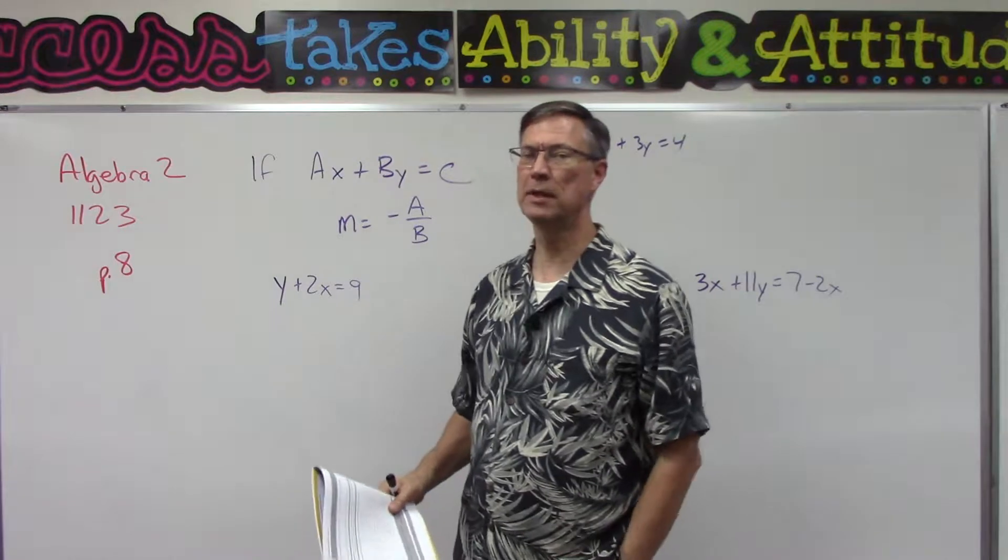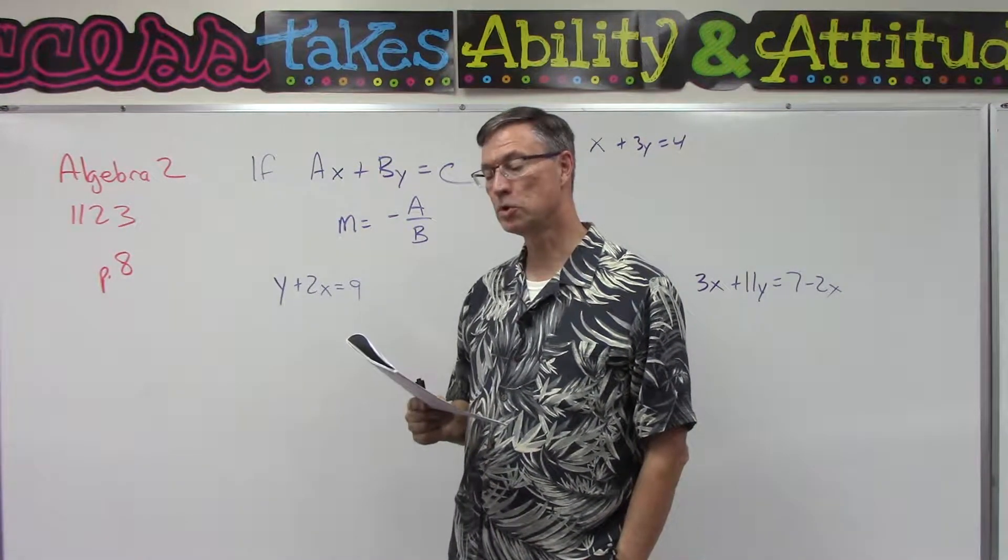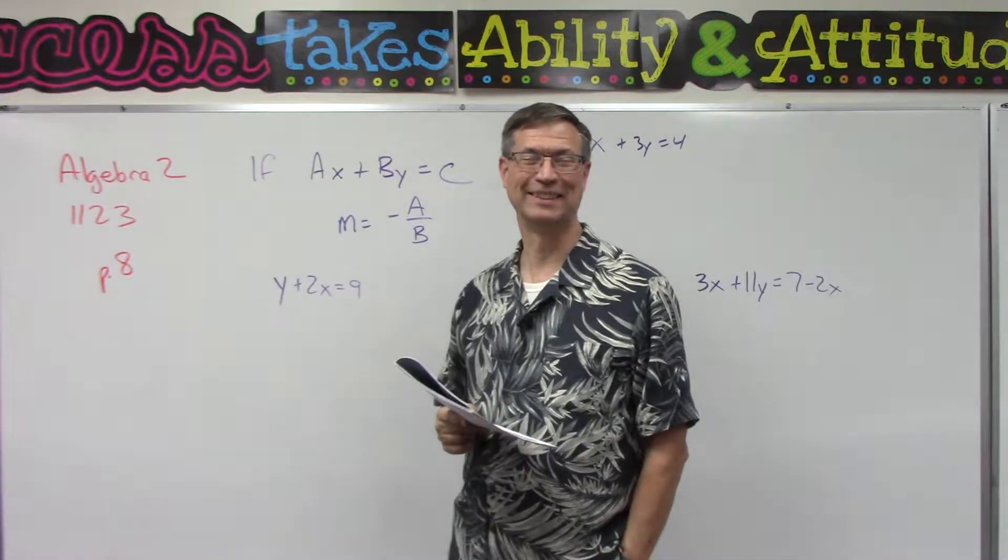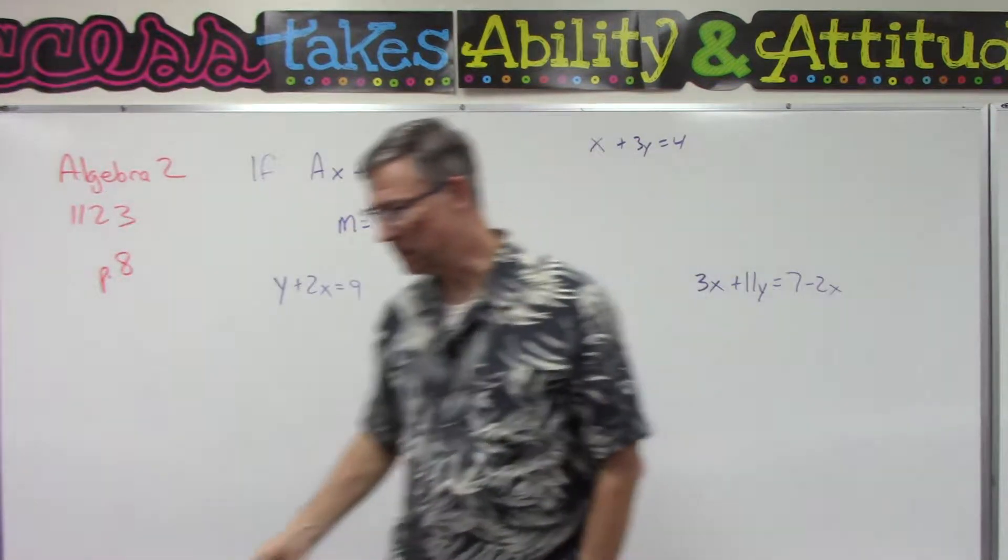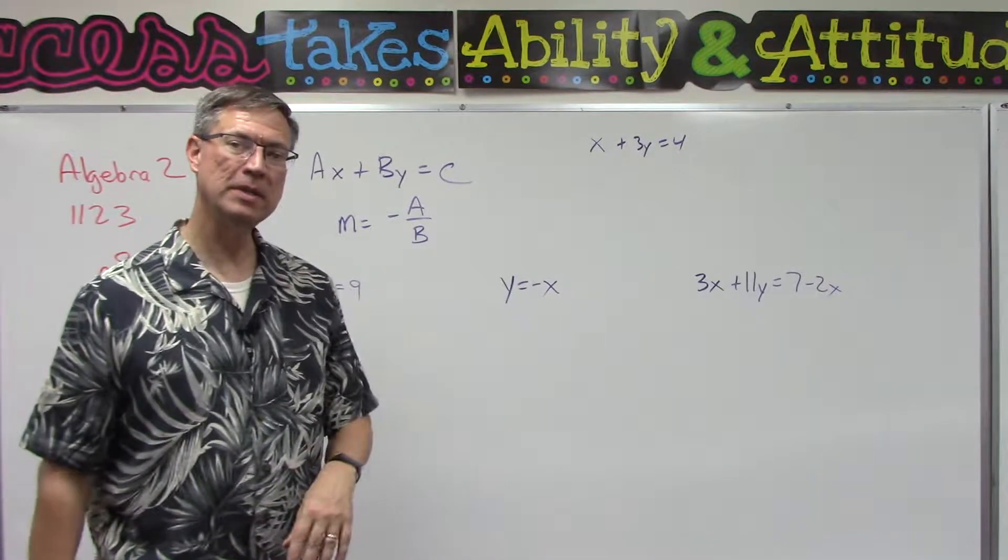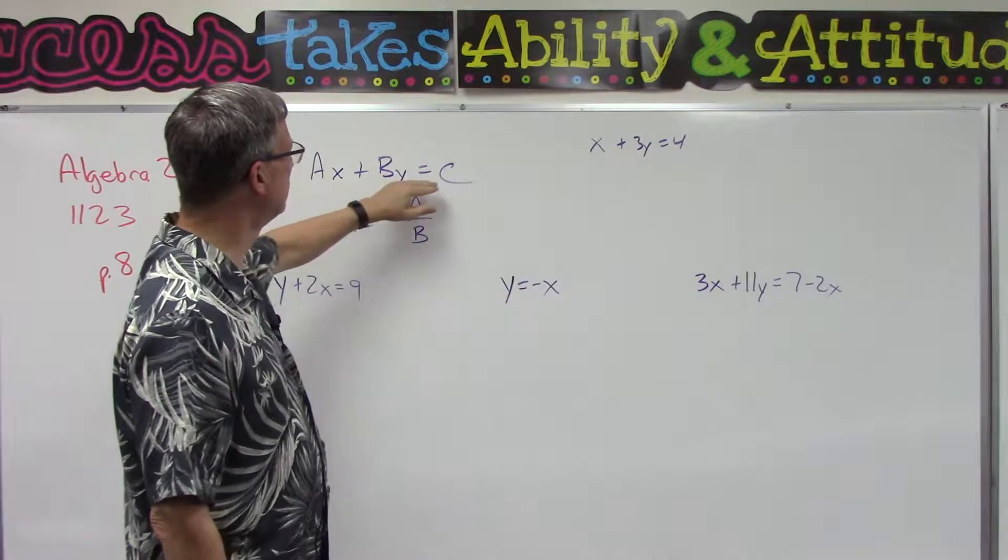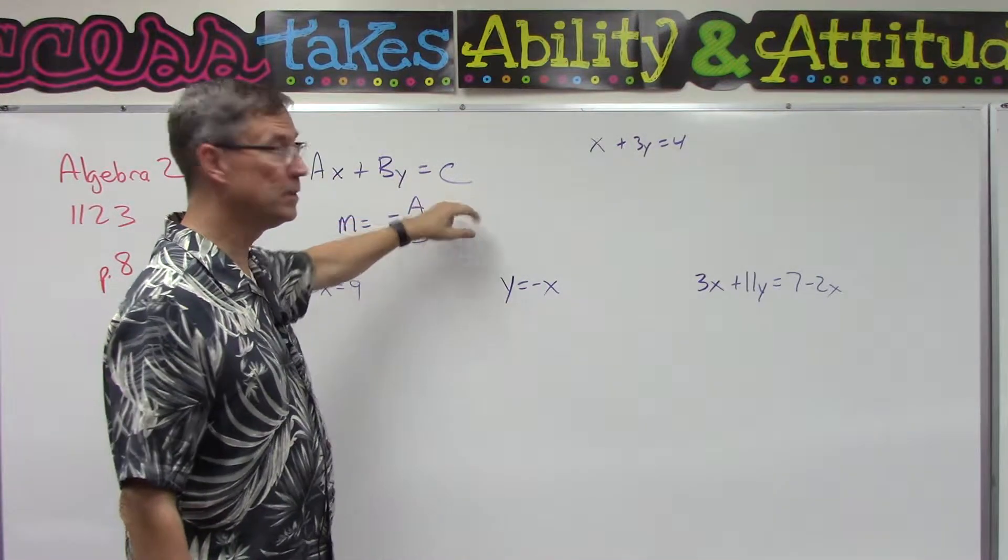All right, easy lesson. You'll like an easy lesson. This will be an easy page for you. Let's look at page 8, slope of a line. The page has this little formula here that says if we have an equation in this form, we have an x term, a y term, and then that equals a constant.